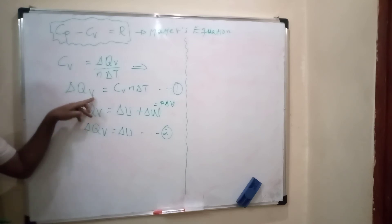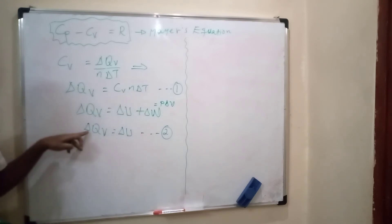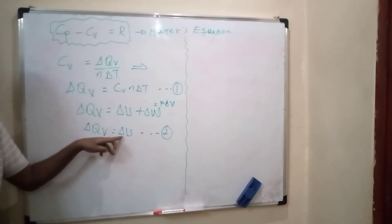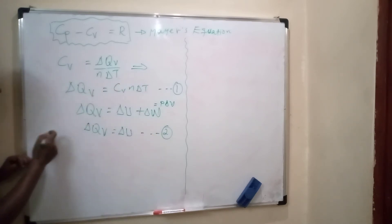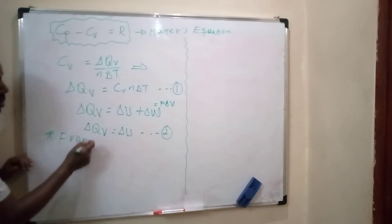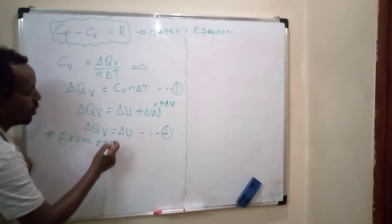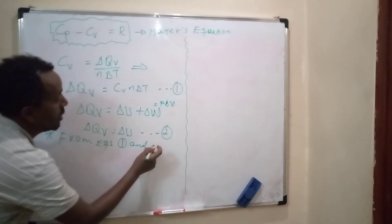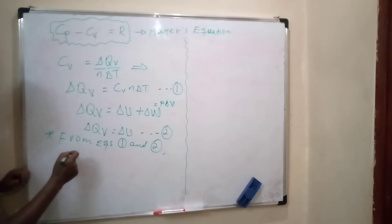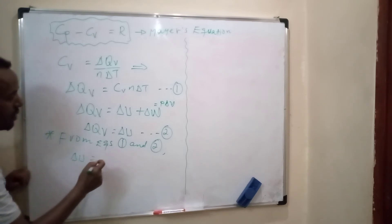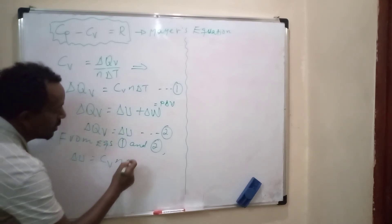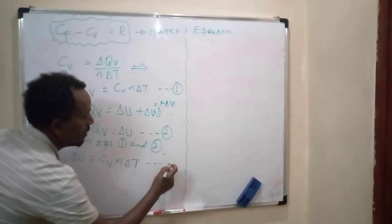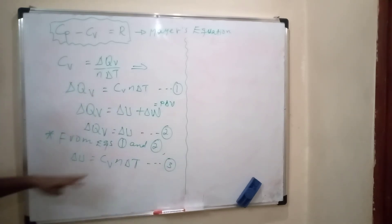From equation one, ΔQv = Cv · n · ΔT, and from equation two, ΔQv = ΔU. Combining equations one and two, we get the change in internal energy of the system equals Cv · n · ΔT. Take this as equation three.